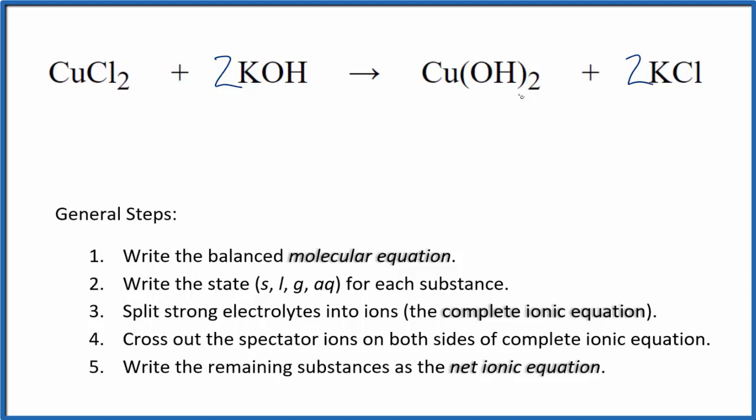Now we can write the net ionic equation. First we need to write the state for each substance. So compounds with chloride, they're in general soluble, so we write aqueous after those. Compounds with potassium as well, those are soluble.